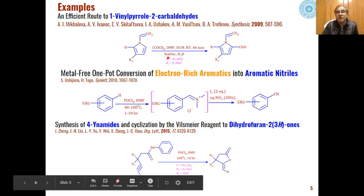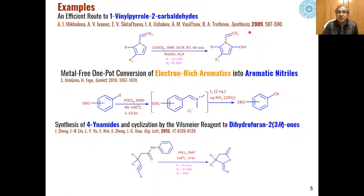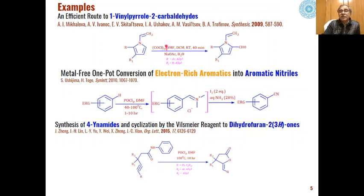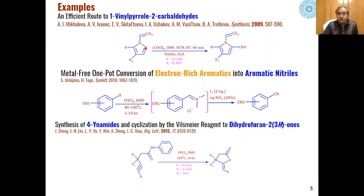Some more recent examples reported in journals include the formation of vinyl-2-carbaldehydes from pyrroles via Vilsmeier reactions. N,N-dimethylformamide in the presence of dichloromethane and phosgene reacts at room temperature to give these products by the same mechanism. DMF reacts with phosgene to create the Vilsmeier reagent, which then adds to the aromatic pyrrole system at a specific position, and formylation takes place at that carbon.